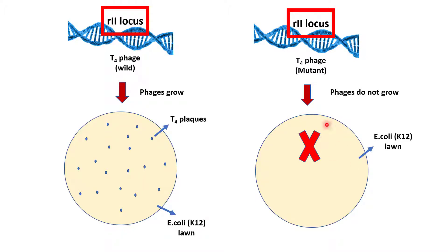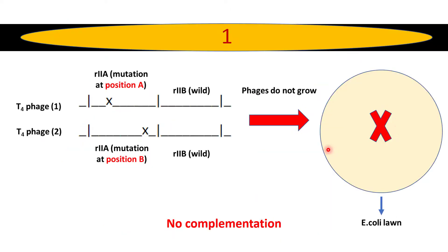He performed three separate tests. In the first test, he took the K12 strain of E. coli and infected it with two types of T4 phages — T4 phage type 1 and T4 phage type 2.